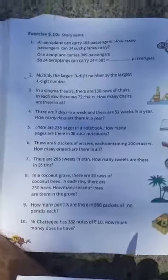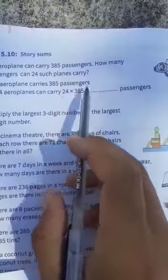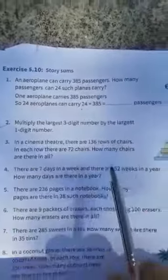Okay class three, now see page number 78, exercise 5.10, story sums. Number one is already finished, just do 385 × 24 and you will get the answer. Number two, I have brought the question here.